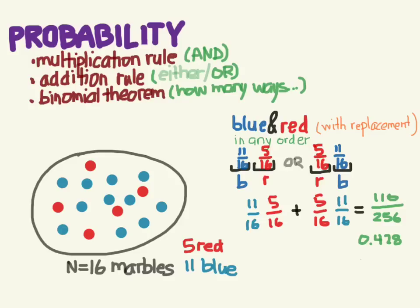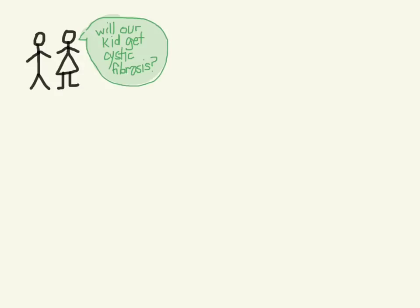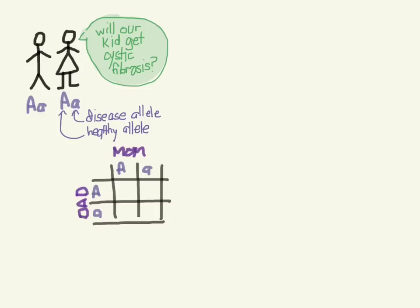We use probability a lot in evidence-based medicine, but let me show how we use it in genetics. Say two parents — a mom and a dad — want to have children but are worried about a disease that runs in their family. They undergo genetic testing and find they are both carriers: each has one healthy allele and one disease allele for that gene.